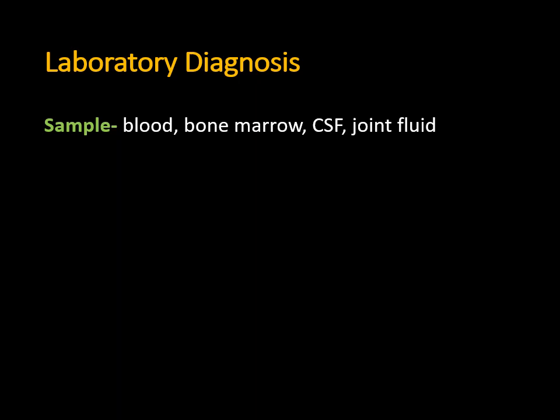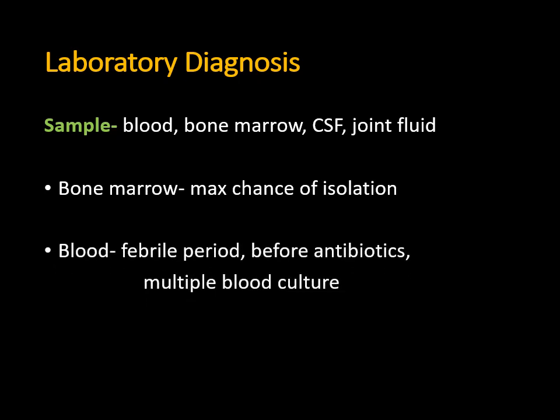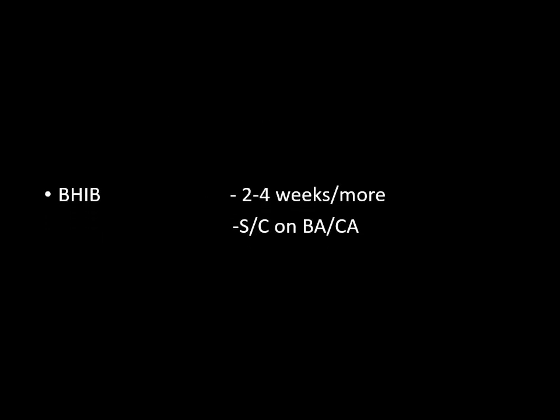Bone marrow has the highest chance of isolation of this bacteria, but it is an invasive and painful procedure, so we usually prefer blood samples. The problem with blood is that you have to take the sample before giving antibiotics to isolate the bacteria. Bone marrow has one advantage: even if antibiotics have been started, a bone marrow sample can be taken and it will not affect the isolation of the bacteria.